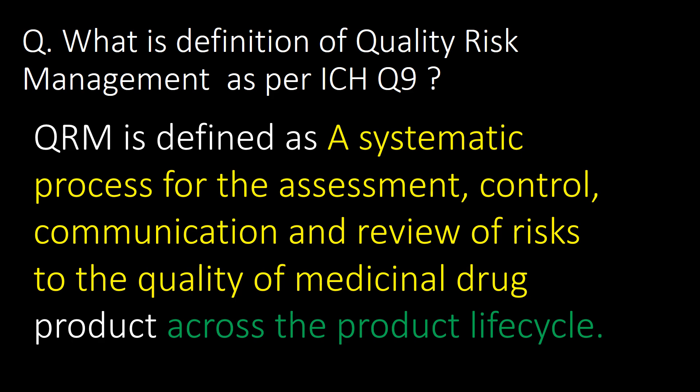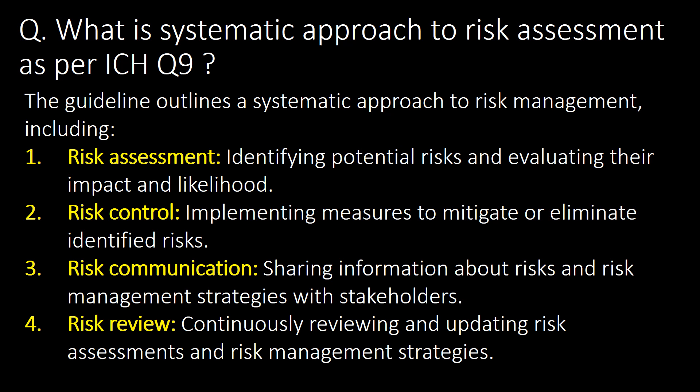What is the systematic approach to risk assessment as per ICH Q9? The guideline outlines a systematic approach to risk management including: Step 1 - risk assessment, where we identify the potential risks and evaluate their impact and likelihood; Step 2 - risk control, where we implement measures to mitigate or eliminate identified risks; Step 3 - risk communication, where we share information about risks and risk management strategies with various stakeholders; Step 4 - risk review, where we continuously review and update the risk assessments and risk management strategies.